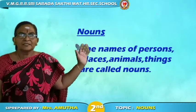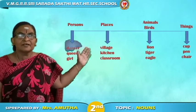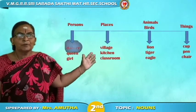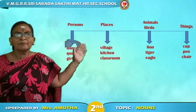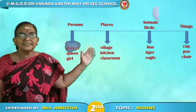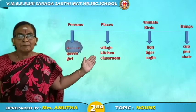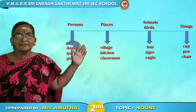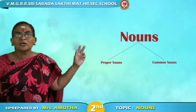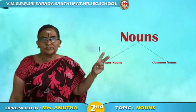Girl, queen, and dancer are examples for persons. Village and classroom are examples for places. Lion, tiger, and eagle are animals. Cup, pen, and chair are things. Now in this class we are going to learn two kinds of nouns.